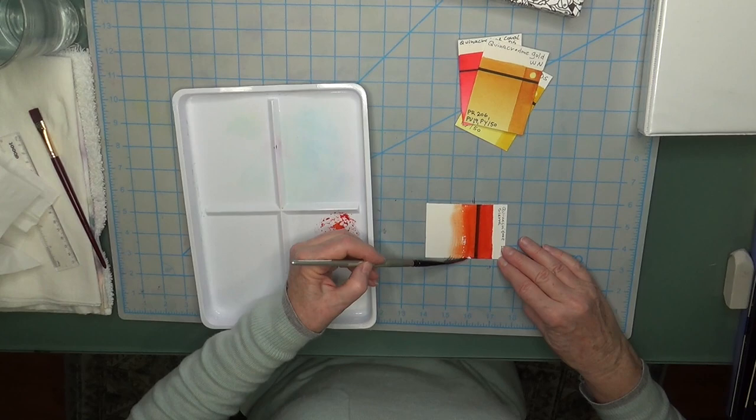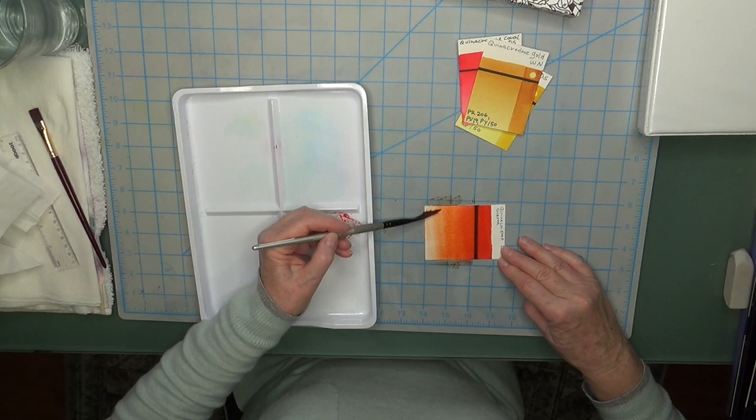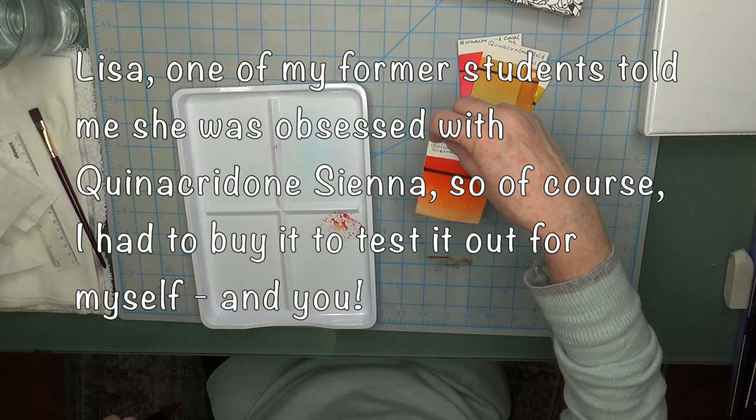As it hits the water down here, it starts to dilute. That's what I want - to see what it looks like full strength and when it's watered down. That's that beautiful color. I can totally see why Lisa loves that color. We're going to let it dry.